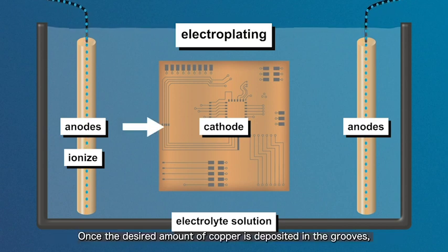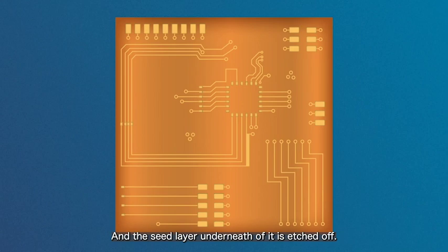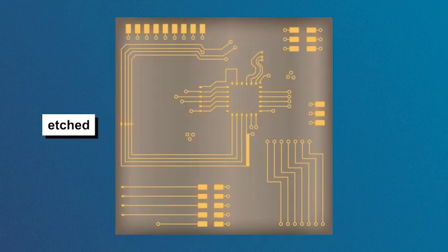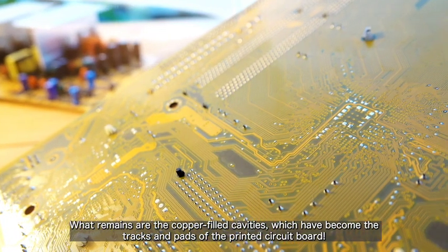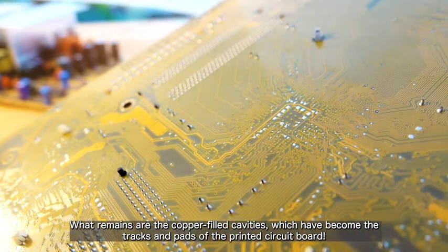Once the desired amount of copper is deposited in the grooves, the rest of the photoresist is removed and the seed layer underneath it is etched off. What remains are the copper-filled cavities, which have become the tracks and pads of the printed circuit board.